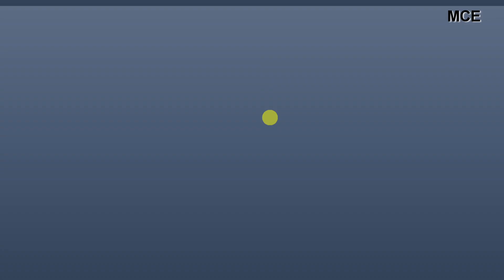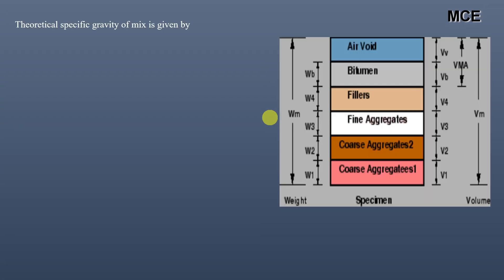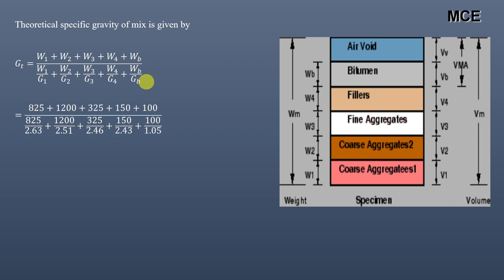The first thing which we will do is find the theoretical specific gravity of the mix. This is given by Gt equals W1 plus W2 plus W3 plus W4 plus Wb divided by W1 divided by G1 plus W2 divided by G2 plus W3 divided by G3 plus W4 divided by G4 plus Wb divided by Gb. If we put the value for different variables, we get the theoretical specific gravity of this mix equal to 2.406.